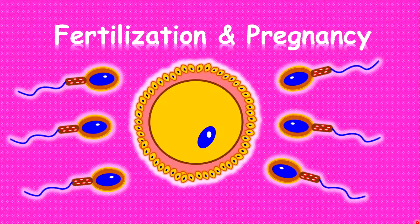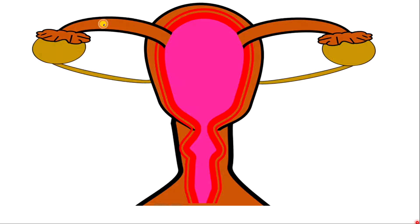Let's look at the fertilization process. For fertilization to take place, the penis must enter the vagina and deposit semen. When semen is being deposited, the sperm cells within the semen will swim towards the egg within the fallopian tube.